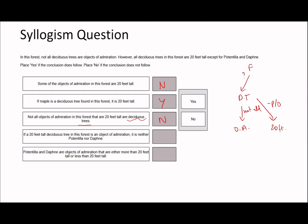If you're struggling with creating hypotheticals, check out my first and second videos where I explain the idea in more detail. 'If a 20-foot-tall deciduous tree in the forest is an object of admiration, it is neither potentilla nor daphne' — yes, because it being 20 feet tall already tells us it can't be potentilla or daphne since neither of those are 20 feet tall. Potentilla and daphne are objects of admiration that are either more or less than 20 feet tall. The next part about it being an object of admiration is sometimes right, but we can't confirm that, so it's no — partially right, which is one of the tricks they use.